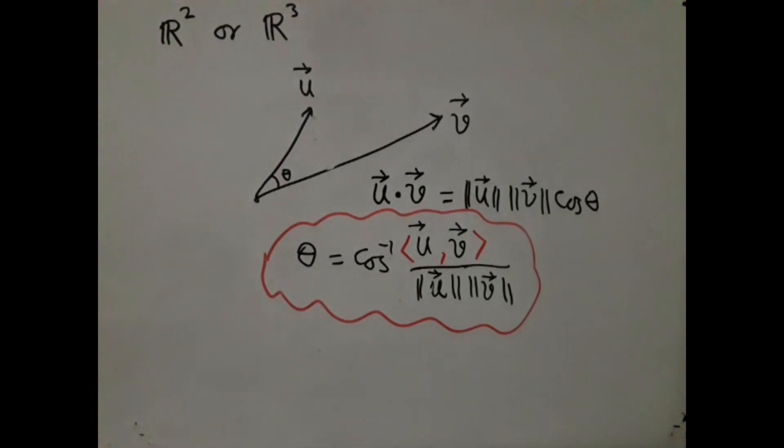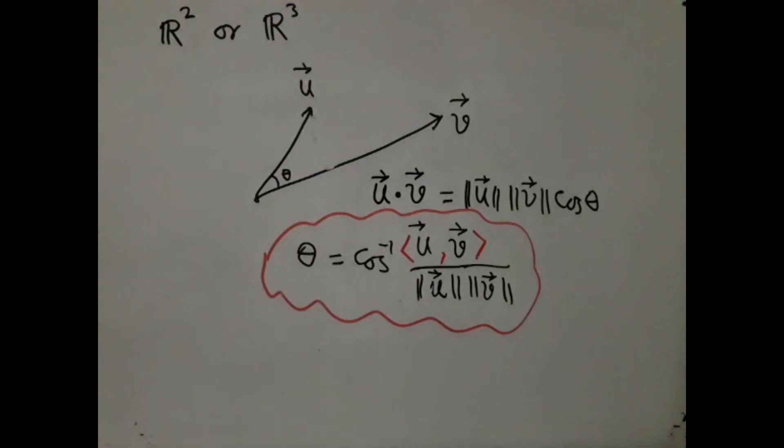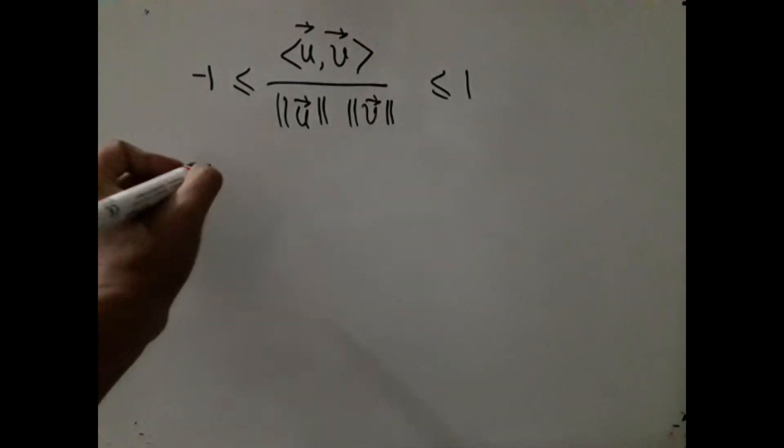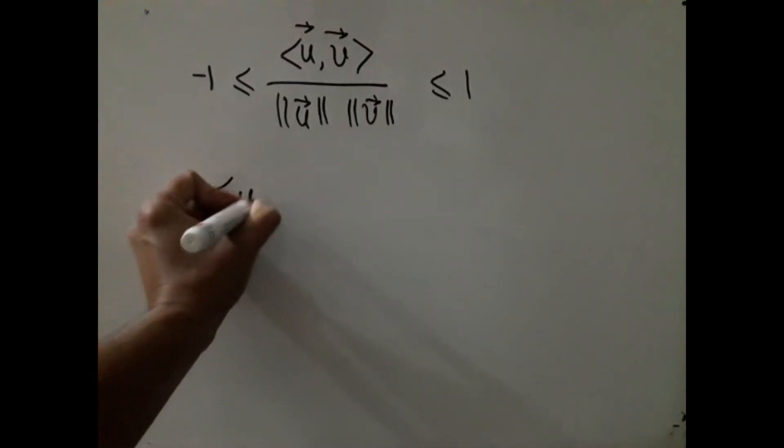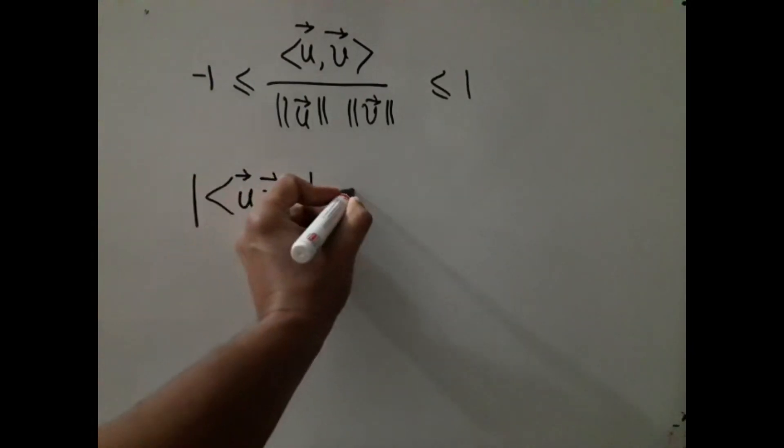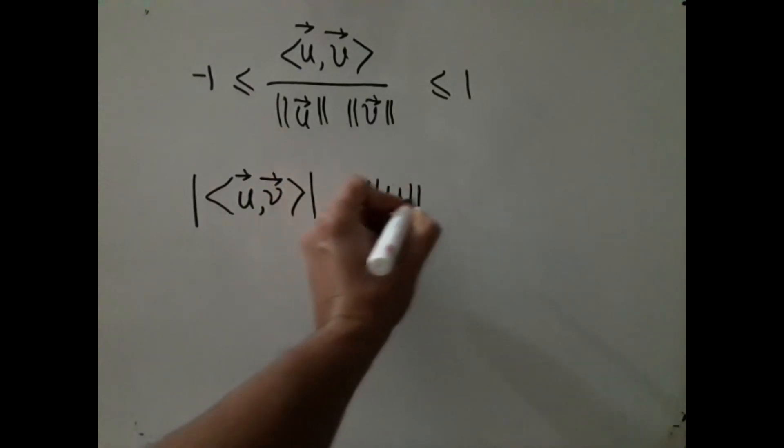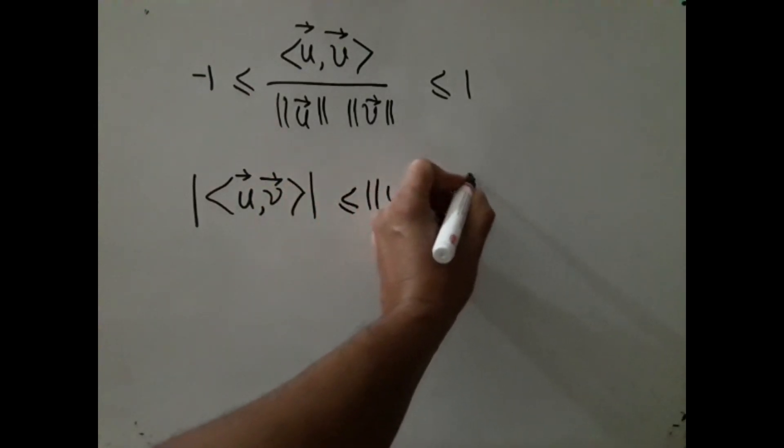There is, however, one difficulty. In order for us to take cos inverse, we must need this quantity to lie between -1 and +1. Or equivalently, we want |u·v| ≤ ||u|| ||v||.